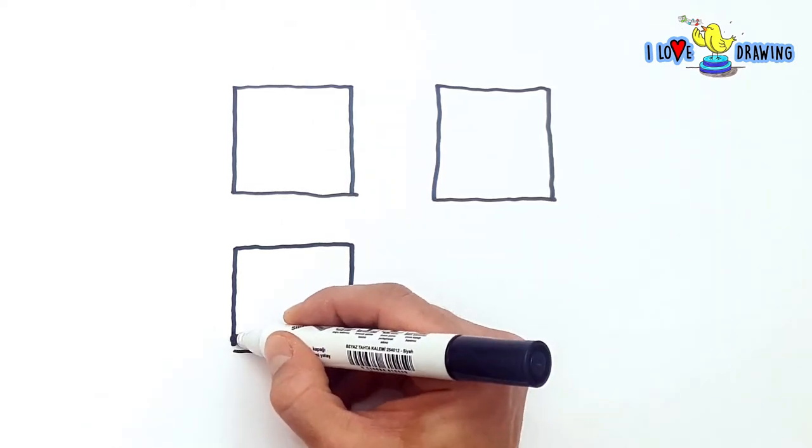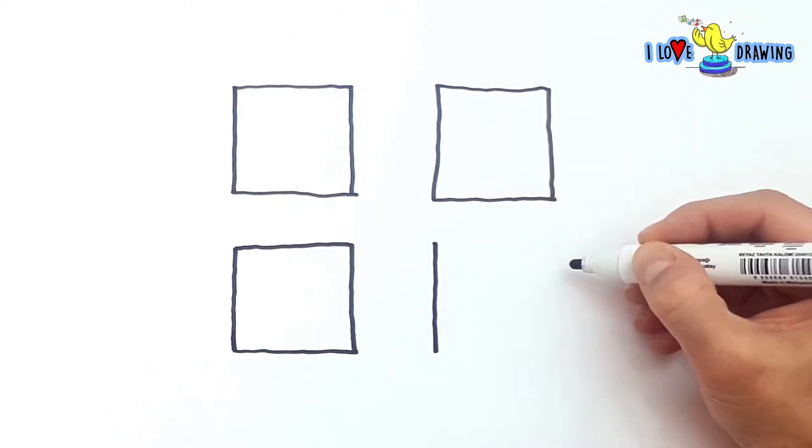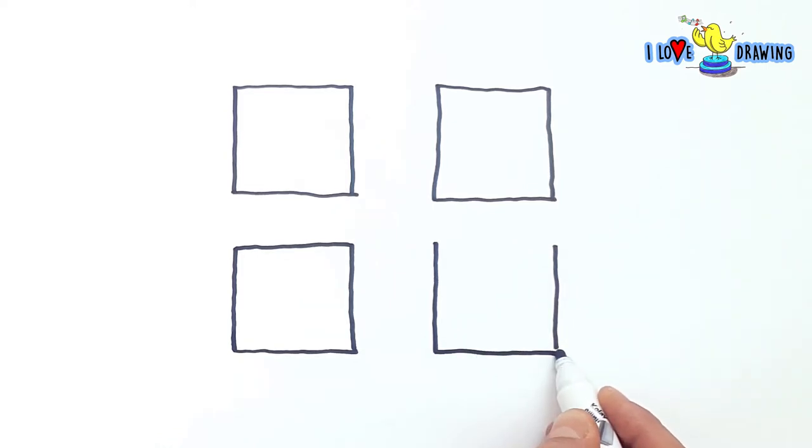Today we're drawing four squares and each of those squares are going to have a different facial expression. So they're gonna be feeling different things and we're going to show that with our drawing.